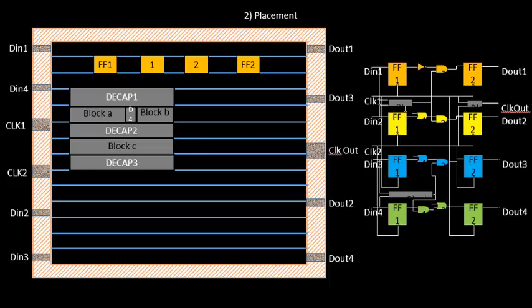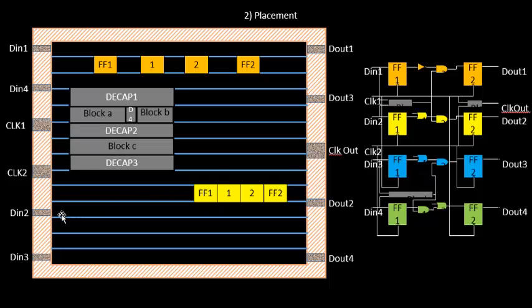Similarly, Block 1 and Block 2 are pre-placed, so the locations of Block A, Block B, and Block C will not be changed. We will be placing the remaining cells. One question that might arise is: why is FF1 not placed close to DIN2 even though it communicates with DIN2? I am taking this example to explain more concepts, introducing various scenarios where we get into issues and then solve them — this is a very good practical example of what happens during circuit implementation.